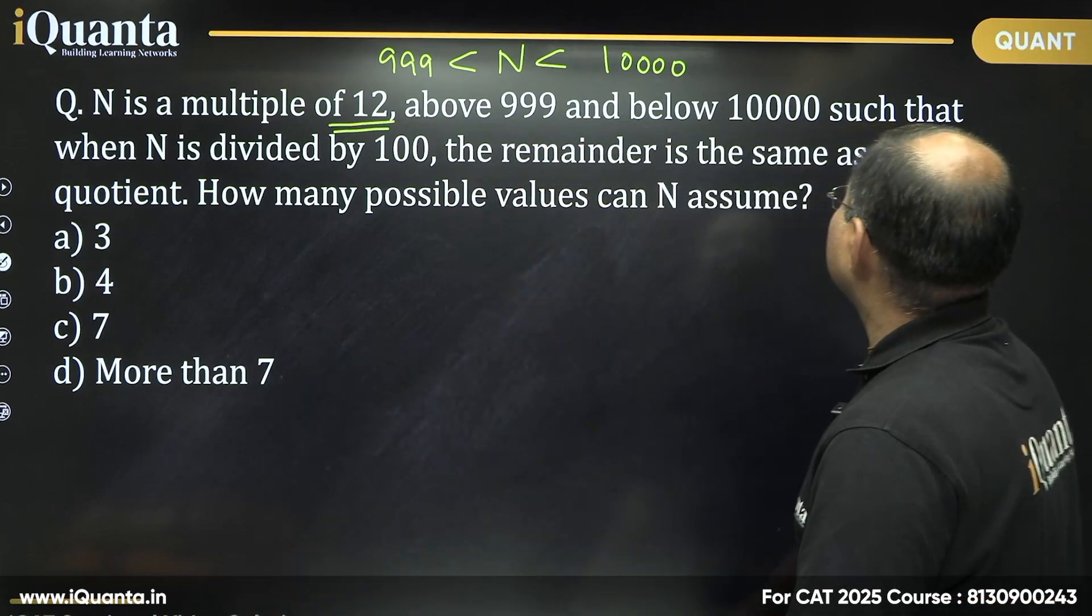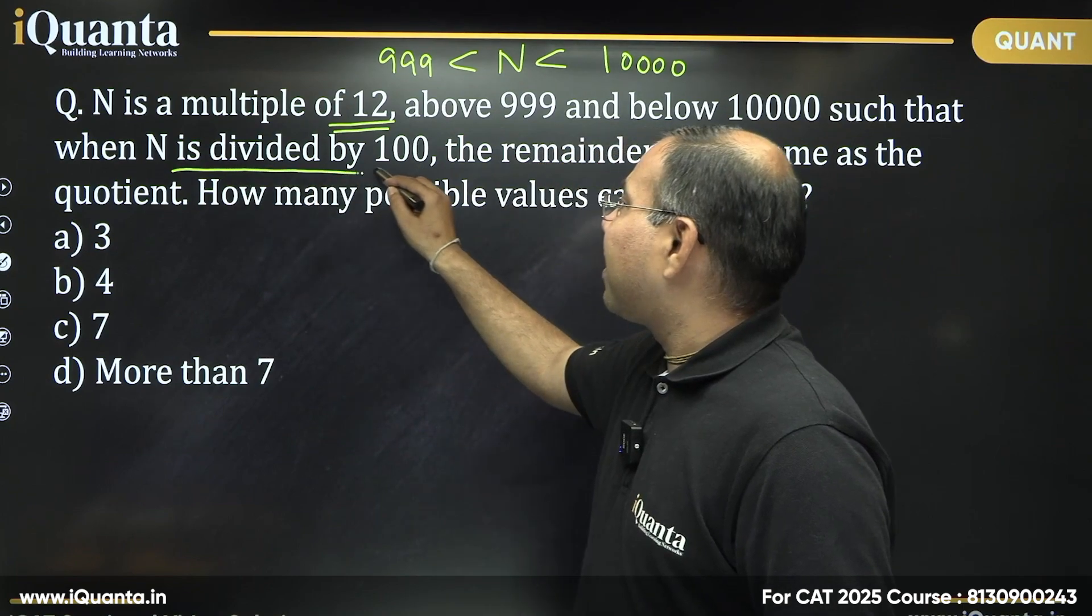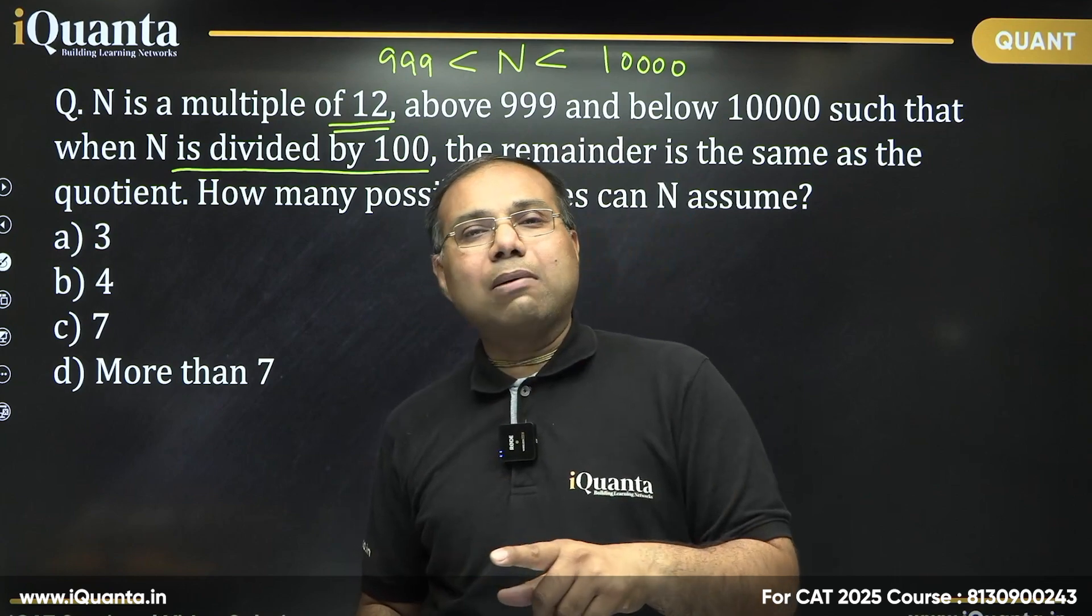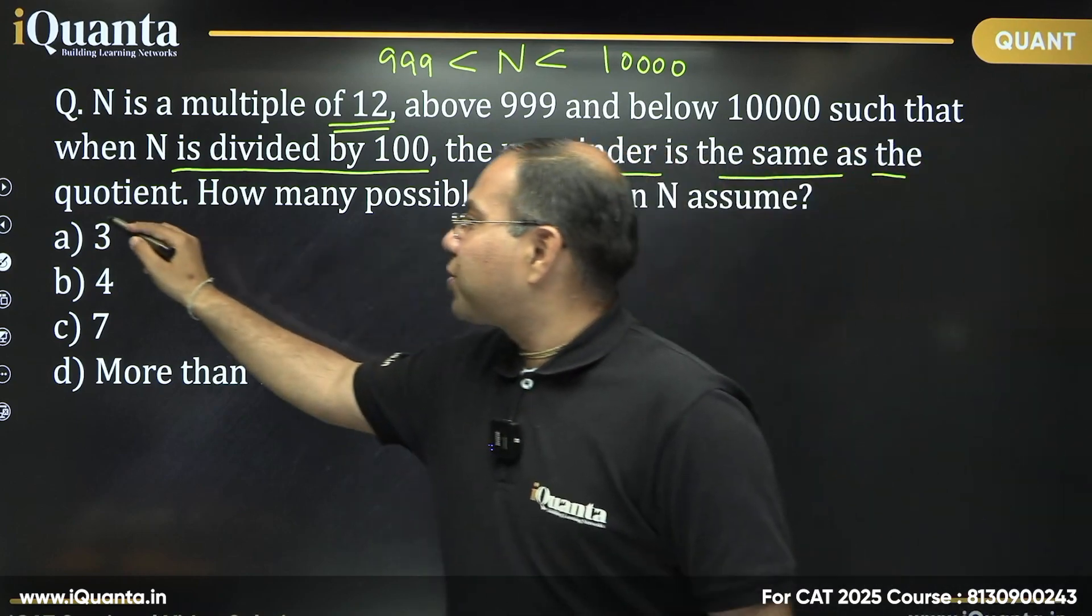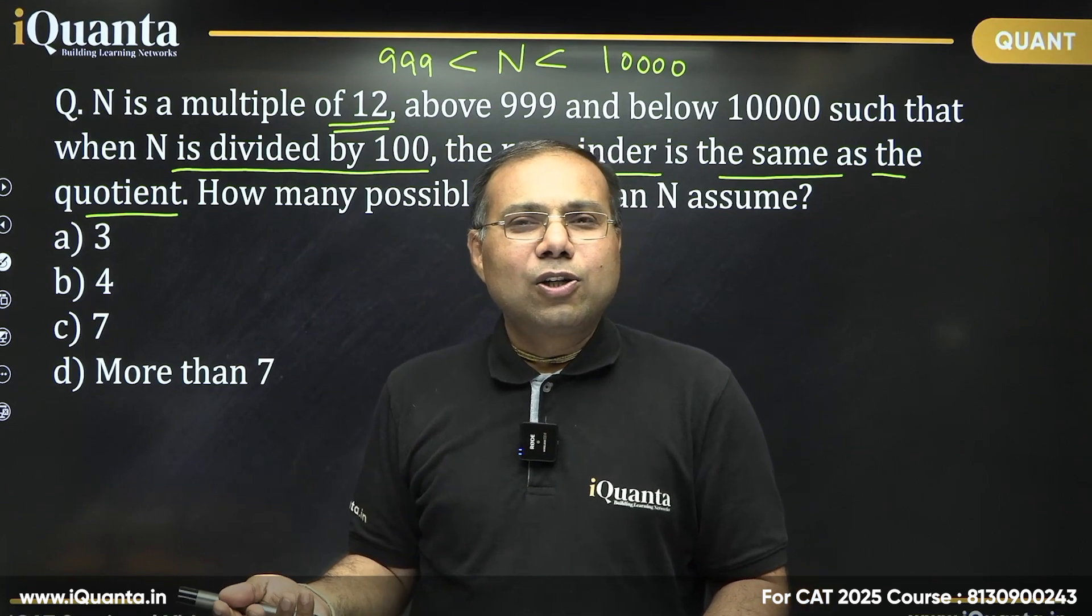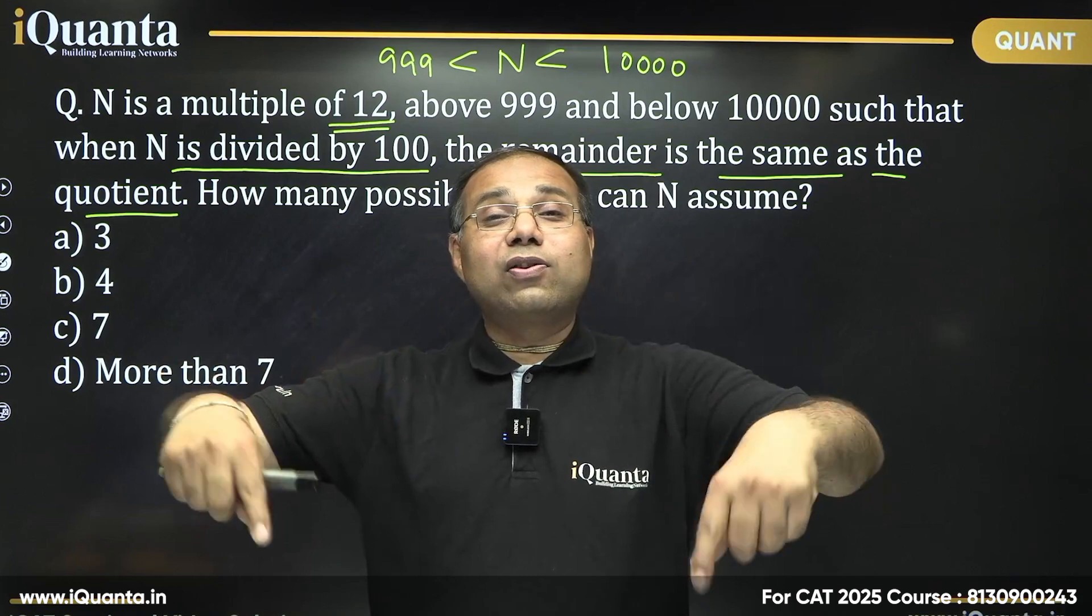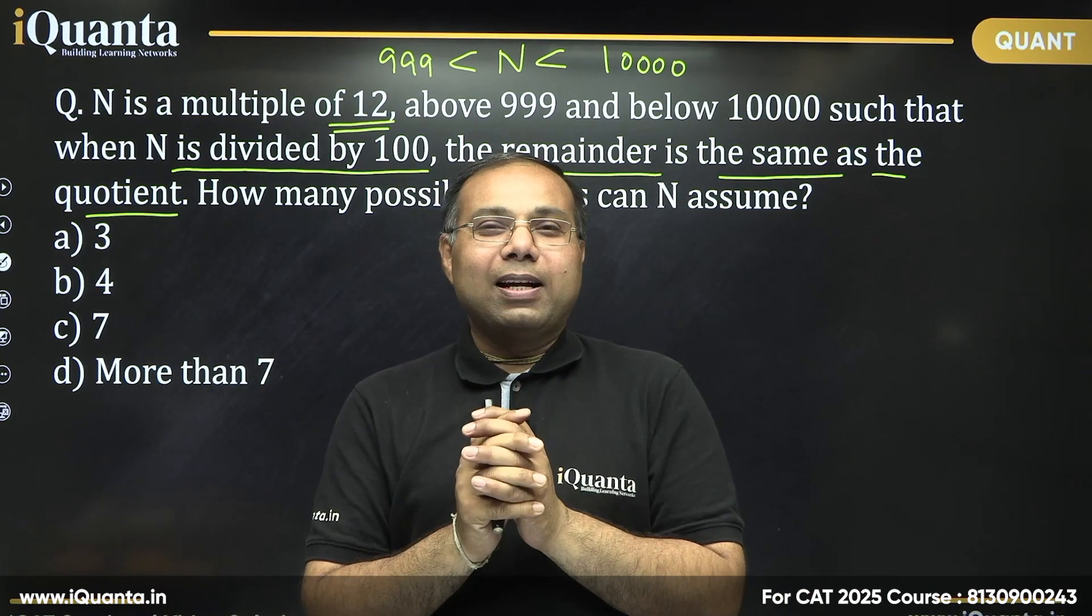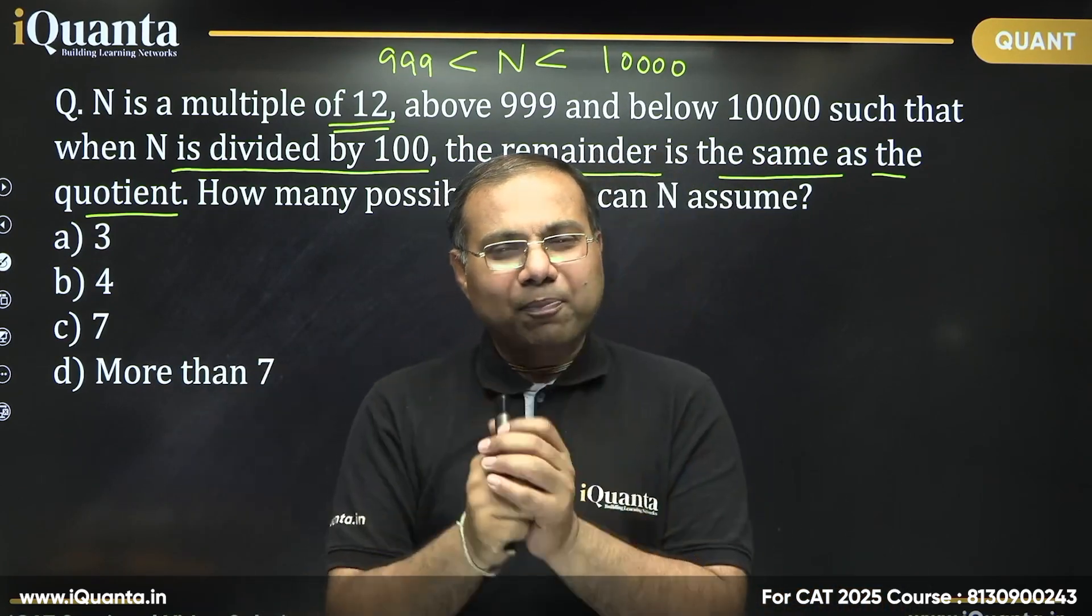Let us proceed further. What are the other conditions? There is some other condition that when this N is divided by 100, the remainder is same as the quotient. Interesting. Many students get confused in that part only. What is the meaning of that? As I have said repeatedly, read very carefully and re-read, re-read, again read and try to understand what is given. It is always better to write the things what is given, write them in the shorter form.